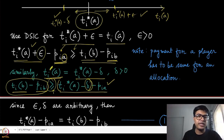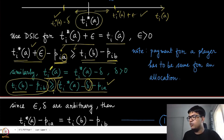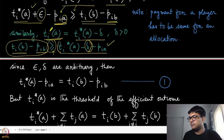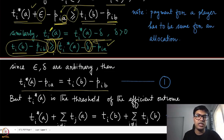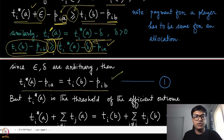Because ε and δ are arbitrary, we can take the limiting values as they go to zero. The two inequalities flip direction, so in the limit they become an equality. This equality will be very crucial and we will use it carefully.